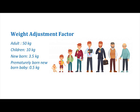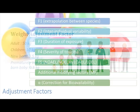For example, if the PDE of children for parenteral administration is to be calculated, 10 kg needs to be considered as the weight adjustment. For adults it is 50 kg, for children it is 10 kg, for newborns it is 3.5 kg, and for prematurely born newborn babies it is 0.5 kg.